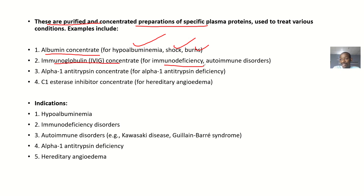Immunoglobulin types include IgG, IgA, IgM, IgD, IgE, and the rest. Immunoglobulin concentrate can also be used to treat autoimmune disorders.